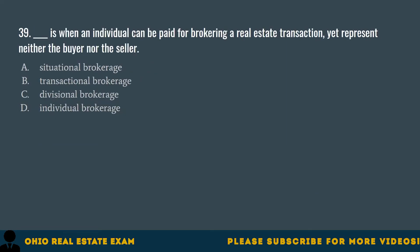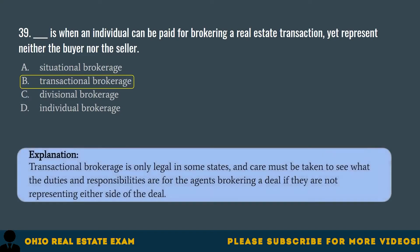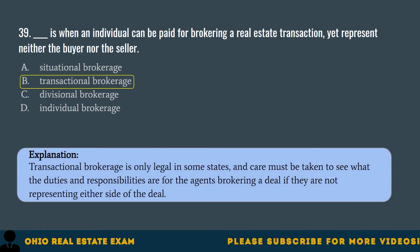Question 39. Blank is when an individual can be paid for brokering a real estate transaction, yet represent neither the buyer nor the seller. A. Situational brokerage. B. Transactional brokerage. C. Divisional brokerage. D. Individual brokerage. The correct answer is B. Transactional brokerage. Transactional brokerage is only legal in some states, and care must be taken to understand the duties and responsibilities for agents brokering a deal when not representing either side.